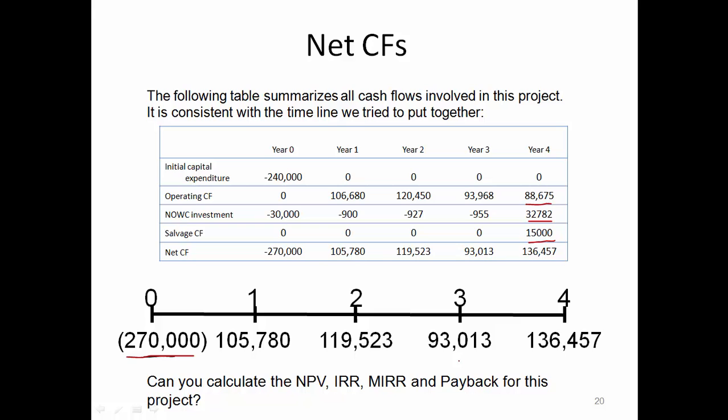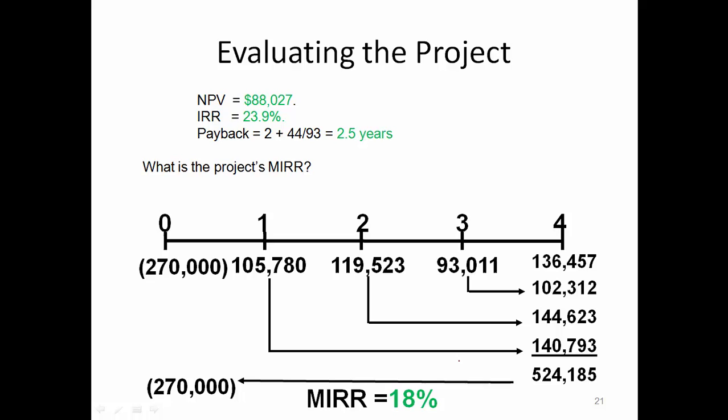We can calculate the NPV — it turns out to be $88,027. The IRR is calculated to be 23.9%. The payback period is 2 plus 44 divided by 93, so it turns out to be about 2.5 years. NPV, IRR, and payback calculations were introduced in the last lecture, so I would recommend you use the cash flow amounts on this timeline and do the calculations yourself to verify these numbers.